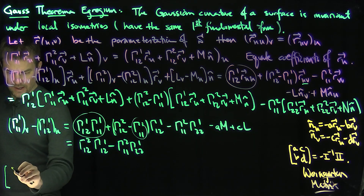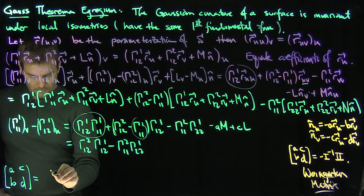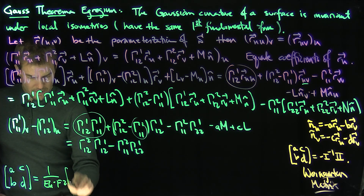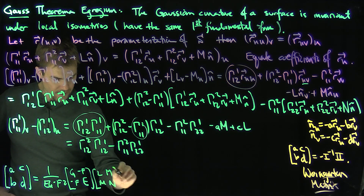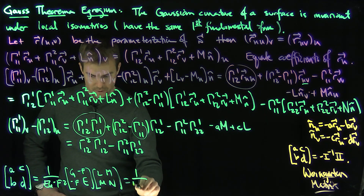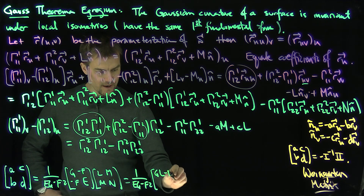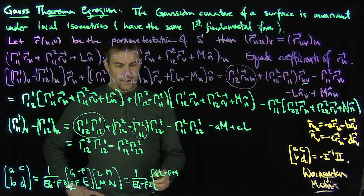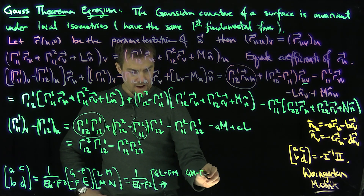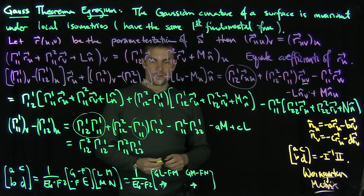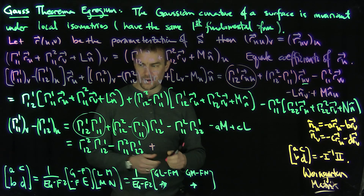Simplifying: the Γ¹₂₁ Γ¹₁₁ terms cancel, leaving Γ¹₂₂ Γ¹₂₁ − Γ¹₁₂ Γ²₂₁ minus AM plus CL. Now the A, C, B, D matrix is (1/(EG − F²)) times [[G, −F], [−F, E]] times [[L, M], [M, N]]. The A entry is (GL − FM)/(EG − F²), and the C entry is (GM − FN)/(EG − F²).